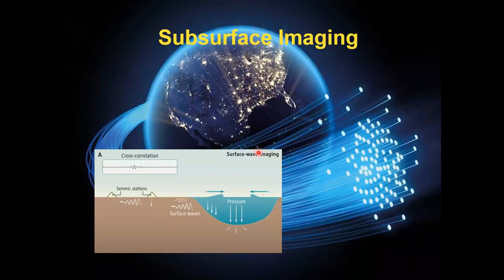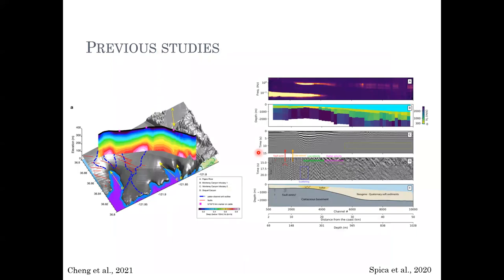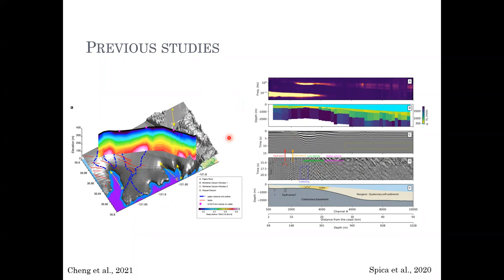Previous studies already showed that we can use ambient noise recorded with dark fibers to image the subsurface structure beneath them — examples from Japan and offshore Monterey, California. The main difference between those studies and what I'm going to show is the scale of the problem. Those fibers were very long — almost 50 kilometers and around 40 kilometers — and they were not concerned about resolving fine structures.